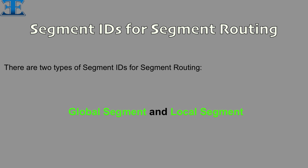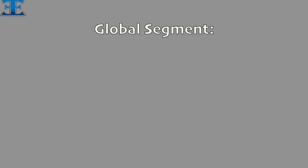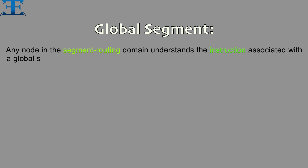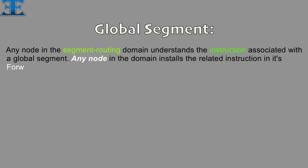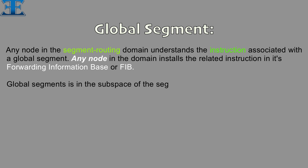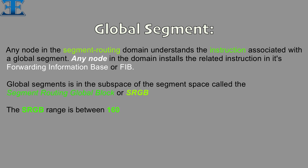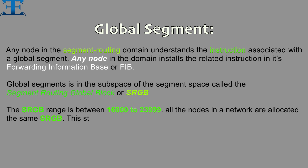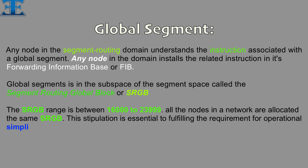Let's describe the global segment. Any node in the segment routing domain understands the instruction associated with a global segment. Any node in the domain installs the related instruction in its forwarding information base, or FIB. Global segments exist in the subspace of the segment space called the Segment Routing Global Block, or sRGB. The sRGB range is between 16,000 to 23,999. All the nodes in a network are allocated the same sRGB, which is essential to fulfilling the requirement for operational simplification.